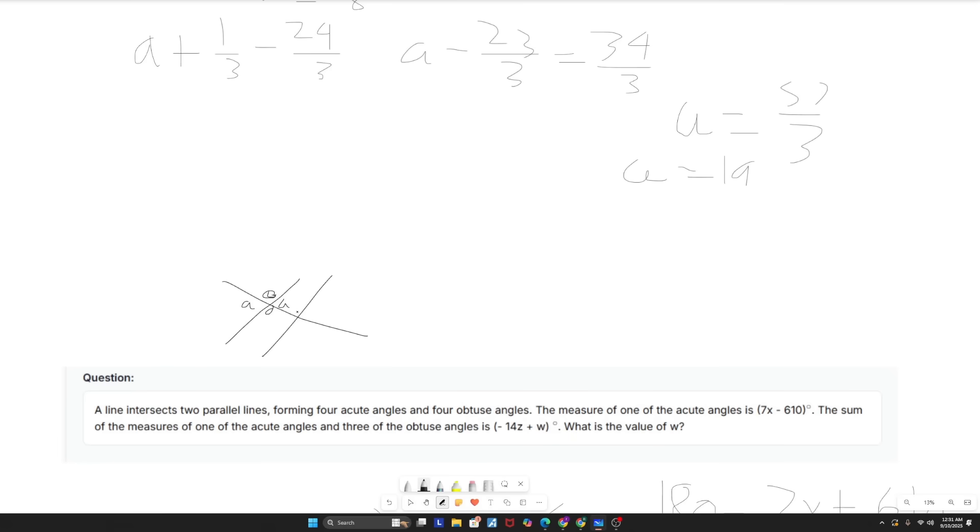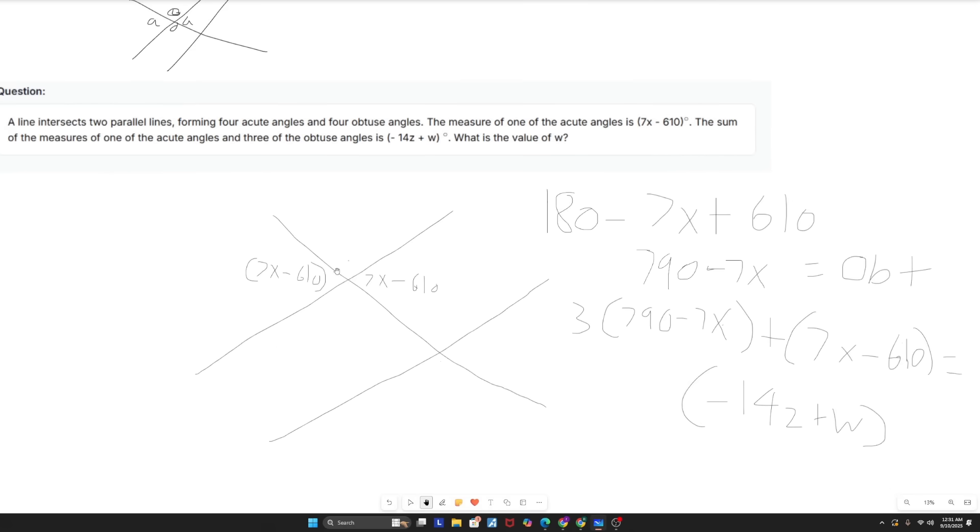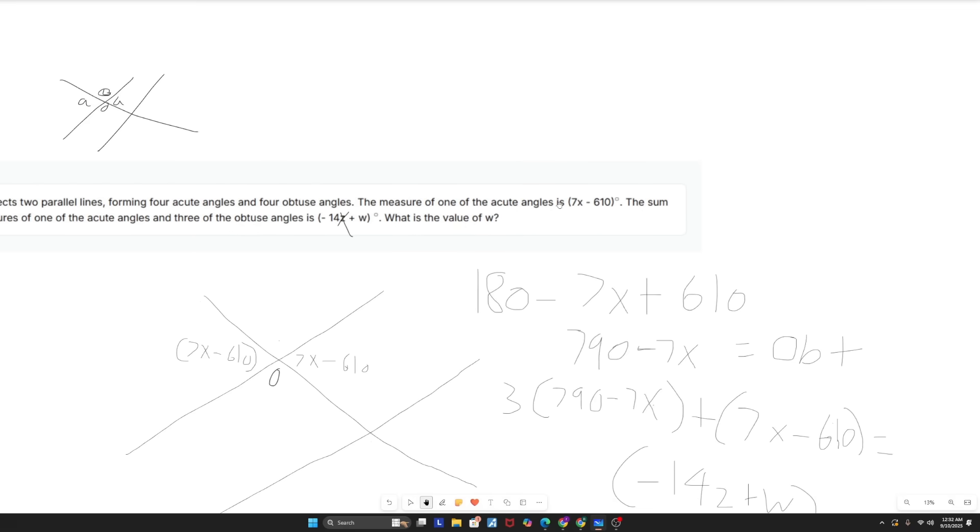And that pattern is going to repeat down here. So keeping that in mind, let's take a look at it on a bigger scale. The measure of one of the acute angles is 7x minus 610 as notated down here. And the sum of the measures of one of the acute angles and three of the obtuse angles is negative 14x plus w. What is the value of w? So, okay, two things. I have my acute angles measure. And in order to get to negative 14x plus w, I need to know what my obtuse angle is. So how do I do that? Well, I know that in a straight line, if I have an acute angle right here, I'm going to have my obtuse angle right here. And those have to add up to 180 because that's how angles work on a straight line. So what I can do is I can take 180 and then subtract the acute angle from it to get my obtuse angle. So what would that be? That would be 180 minus 7x minus 610 in parentheses. And once you distribute it, it's going to look something like that. So 180 minus this is going to give me 790 minus 7x, which is my obtuse angle.